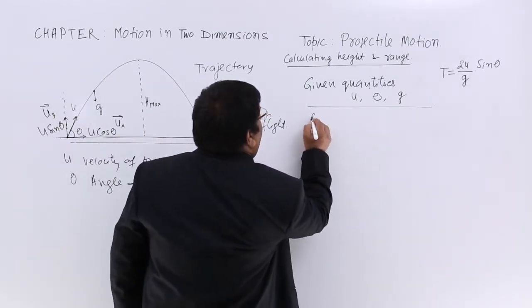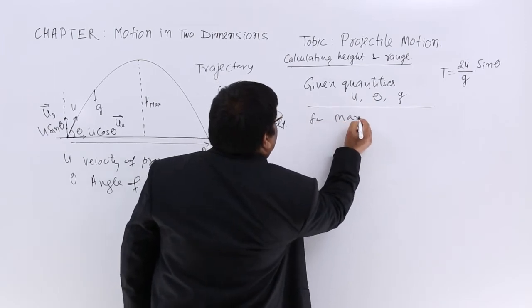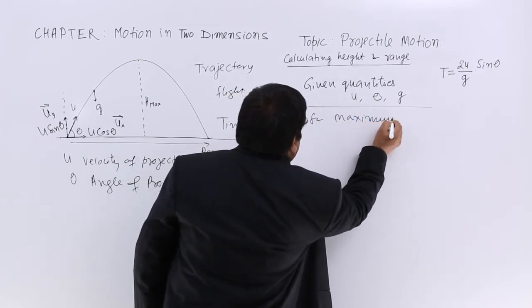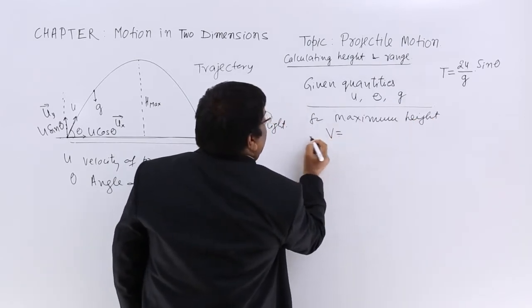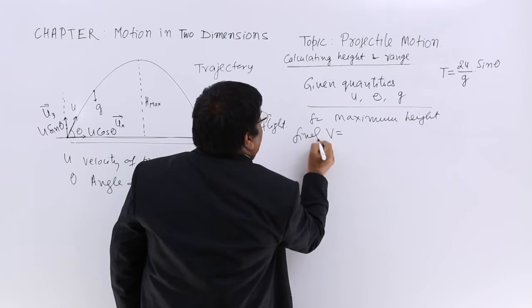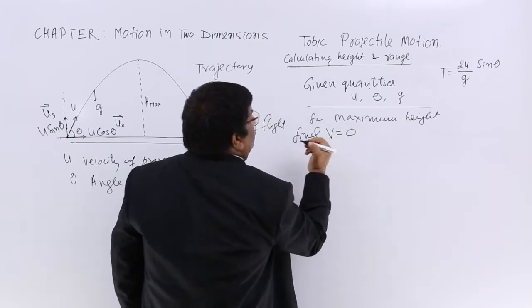So for maximum height, the final velocity V is equal to 0.